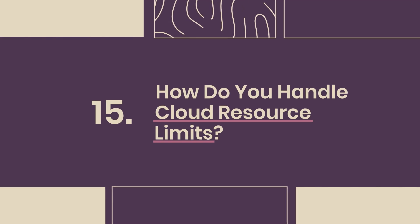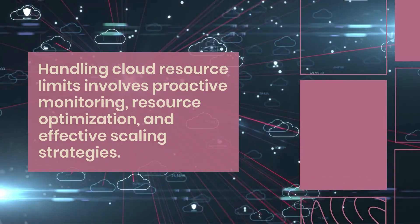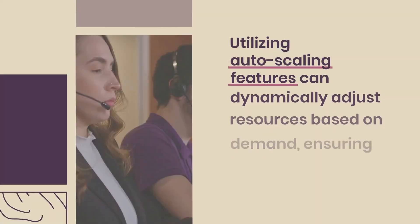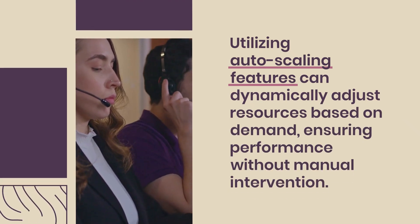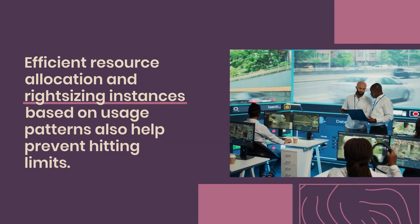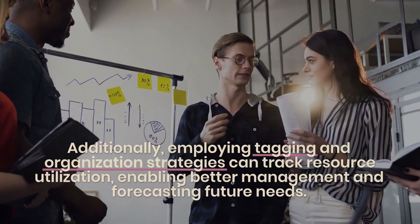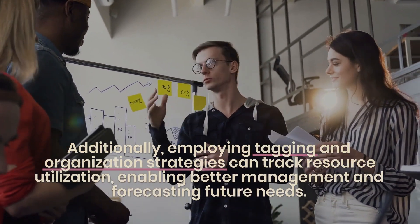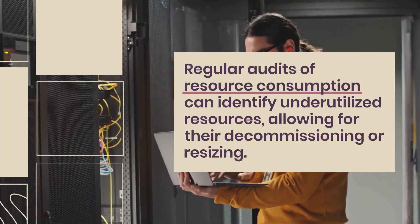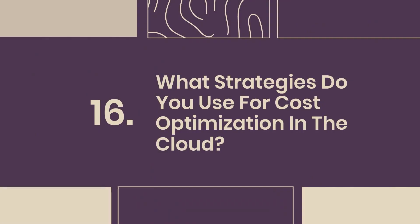15. How do you handle cloud resource limits? Handling cloud resource limits involves proactive monitoring, resource optimization, and effective scaling strategies. First, set up alerts to notify when approaching limits. Utilizing auto-scaling features can dynamically adjust resources based on demand without manual intervention. Efficient resource allocation and right-sizing instances based on usage patterns also help prevent hitting limits. Additionally, employing tagging and organization strategies can track resource utilization, enabling better management and forecasting. Regular audits of resource consumption can identify underutilized resources, allowing for their decommissioning or resizing.